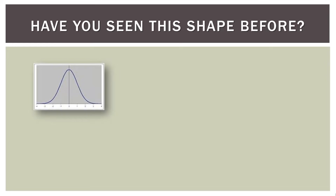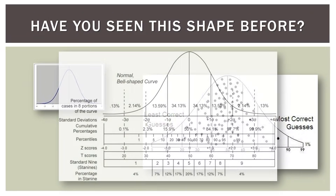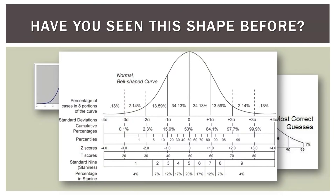You've seen this shape before. Maybe in the front or back of your stats book you've seen something like this — a bell curve with percentages, deviations, Z scores, T scores, stanines, and all kinds of values on it. But oftentimes you don't really understand where this stuff comes from. The idea of this video is to explain several of those things so you can solve problems using the normal distribution.